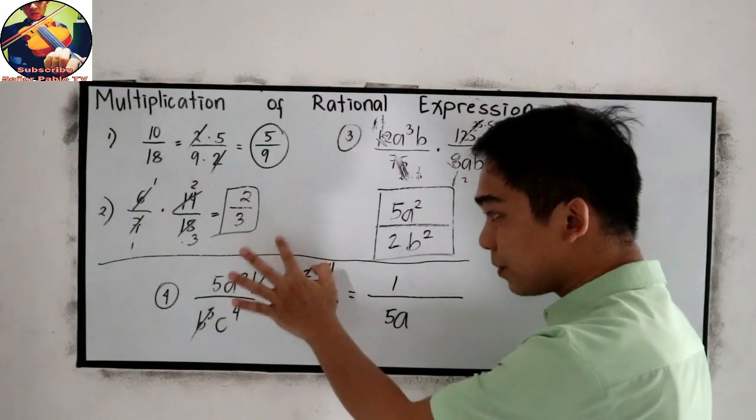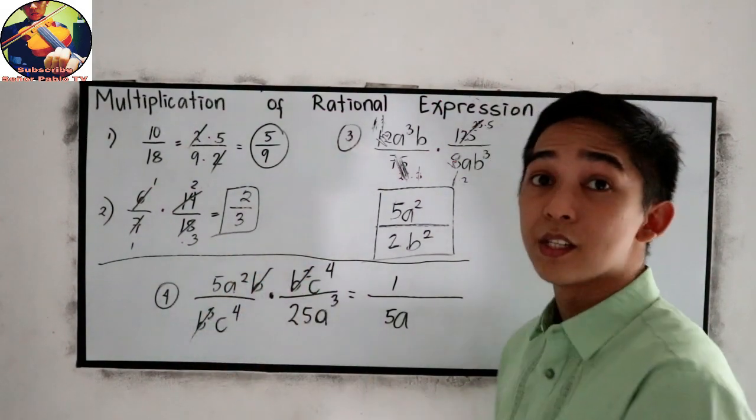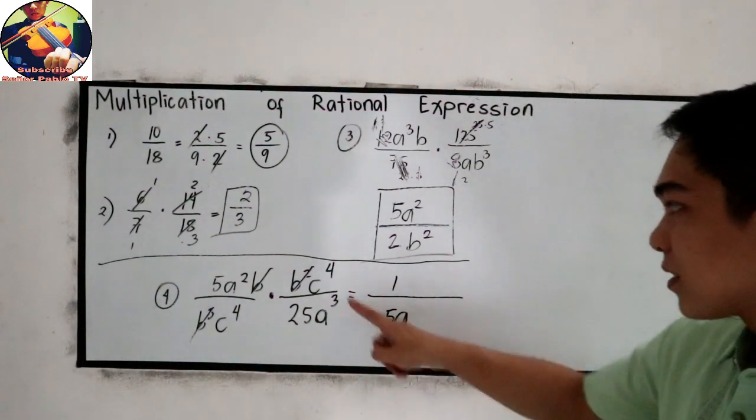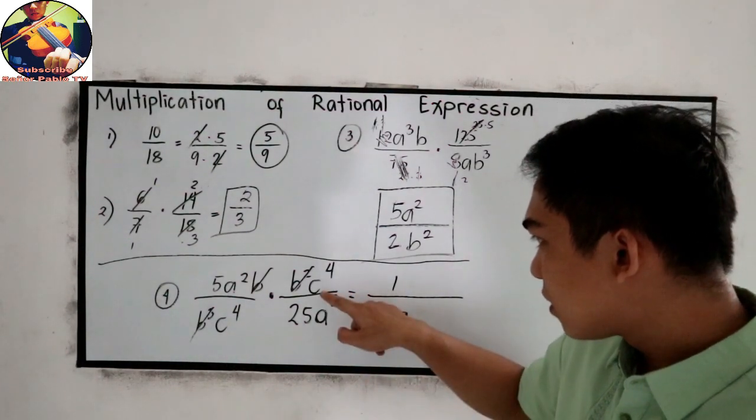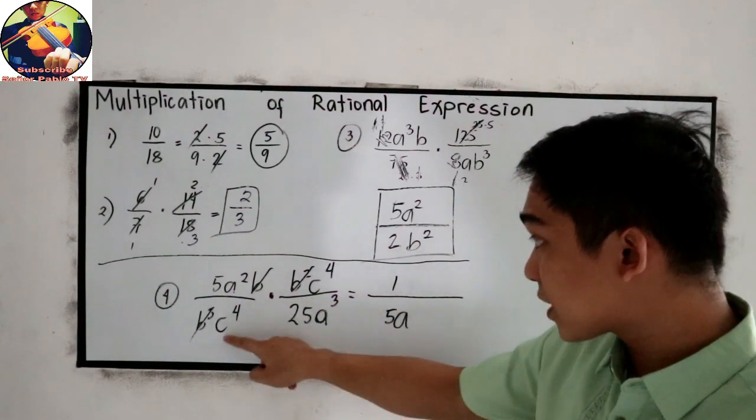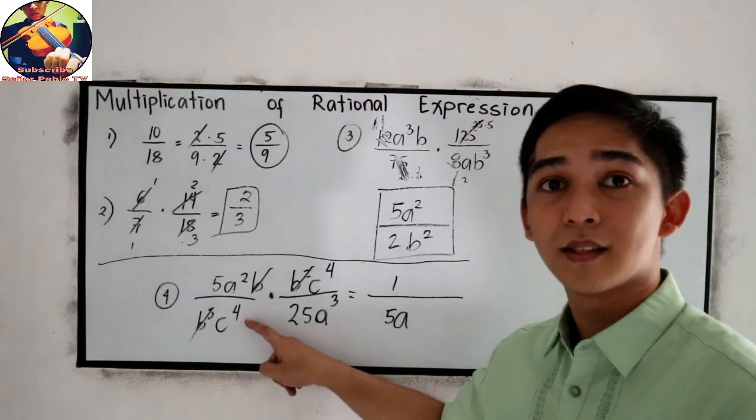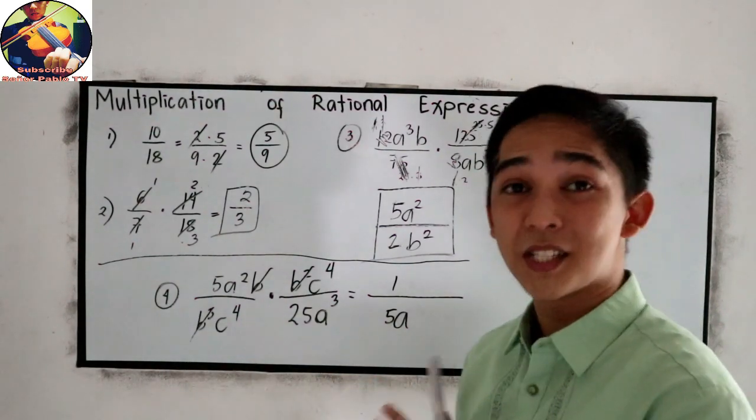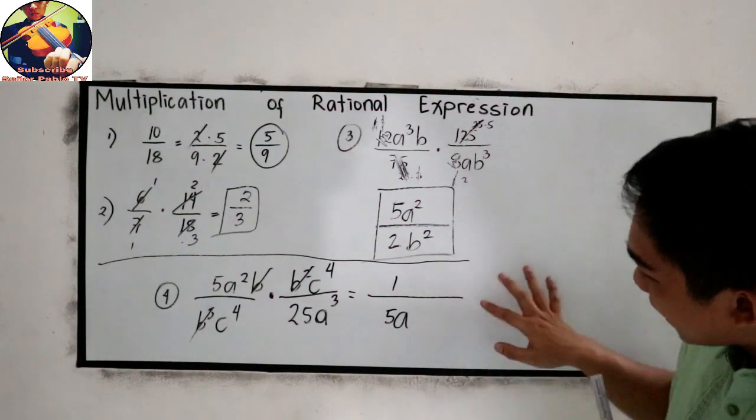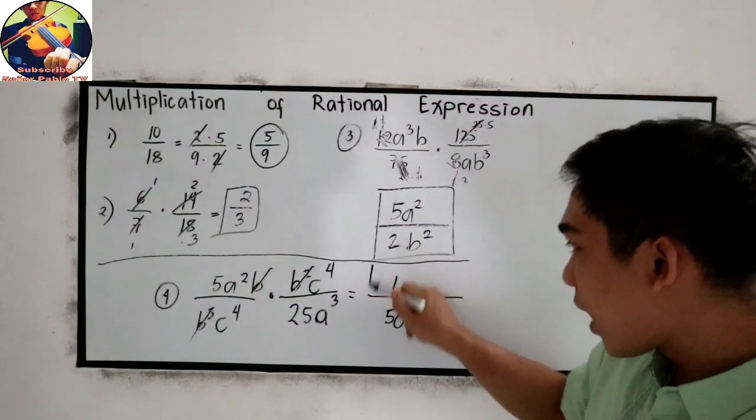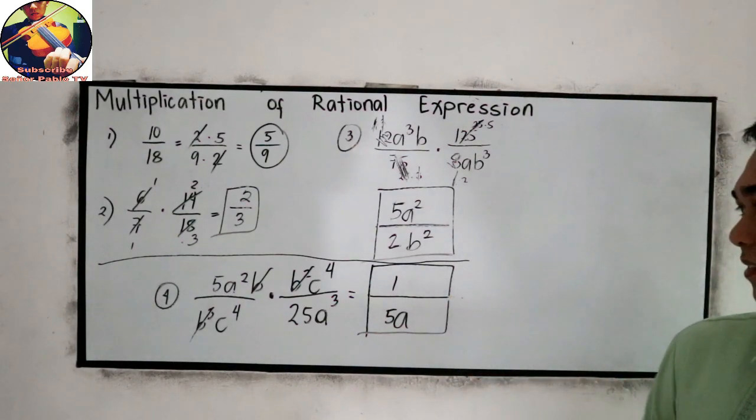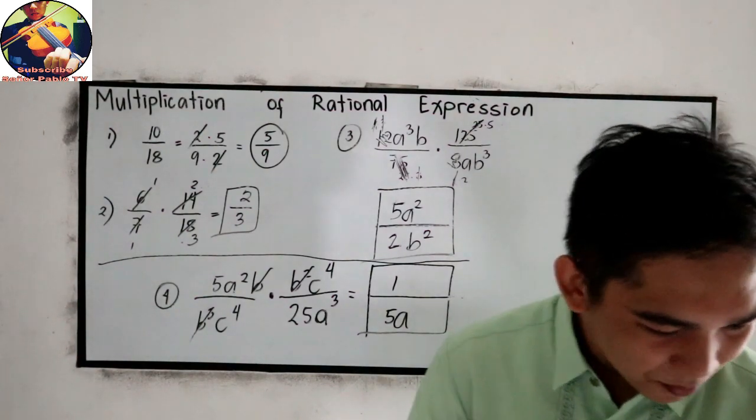Next, for letter C. C⁴ over C⁴, that is 1. So we don't have variable C for our final answer. So our final answer is 1 over 5A. Then our last example.